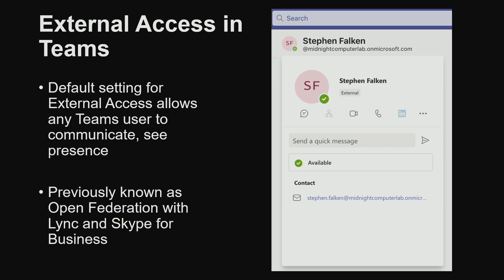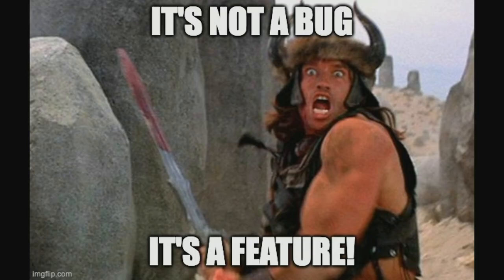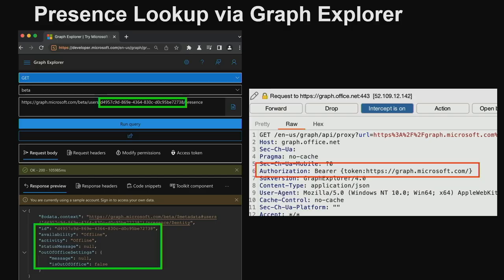Right now it's called external access in Teams, and the default setting is to have it enabled for anyone to speak with you — you might recognize it in Outlook as the green dot showing up next to someone's email when you have the Teams plugin installed. While playing with Graph Explorer, I noticed a presence lookup feature. Working unauthenticated from the outside, it was somehow doing the presence lookup. Playing with it in Burp, it turns out there's a weird bearer token — not a normal bearer token. In the source code, there's a bypass to make anonymous presence lookups. It's on GitHub, even.